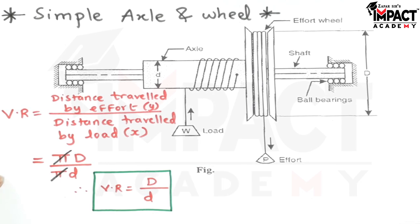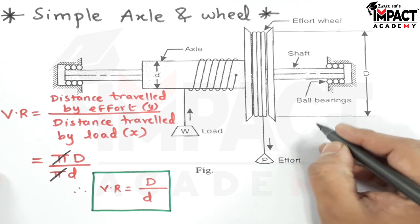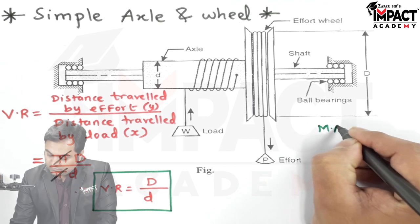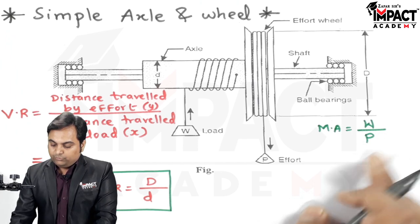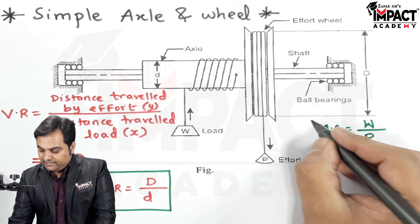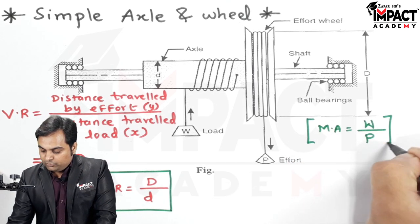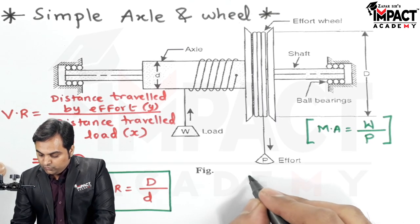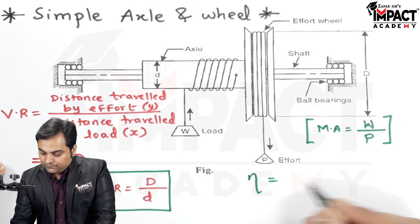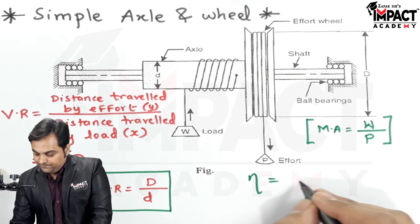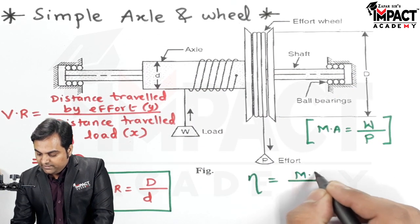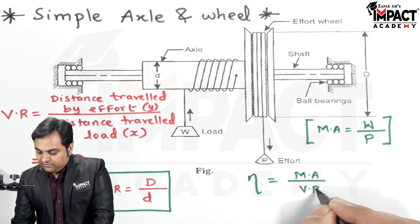Now once we know the velocity ratio we can even get the mechanical advantage, which is the ratio of load to be lifted upon the effort to be applied. And by using both mechanical advantage and velocity ratio we can calculate the efficiency of this machine, which is a simple axle and wheel, given by the formula MA upon VR. And when we want percentage efficiency we have to multiply by 100.